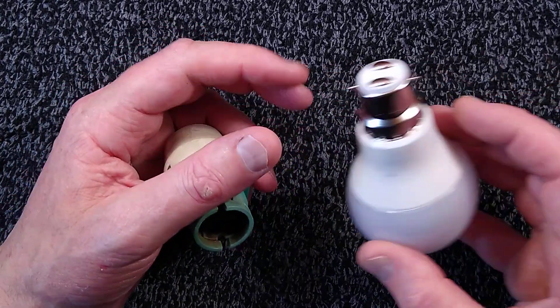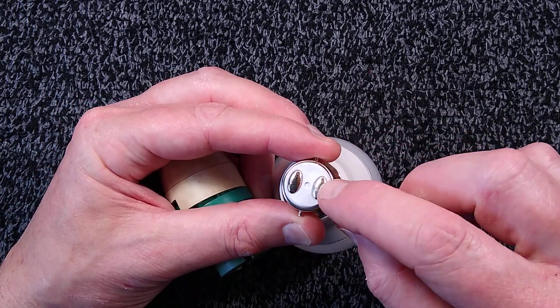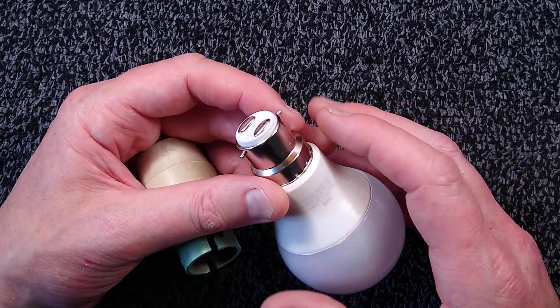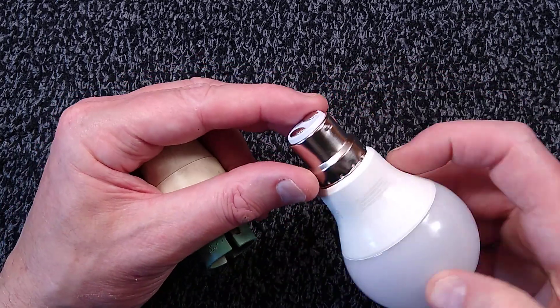In the UK we have what are called bayonet cap lamp holders which have the two pins out the side and then the two contacts at the end. This is not electrically connected to anything—sometimes it's grounded, but usually it's just live and neutral, whichever priority you put it in.